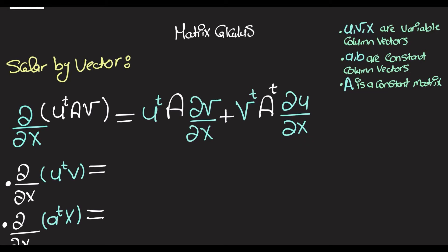For this video, I'll be exploring some more scalar-by-vector identities. I'm going to start by highlighting that u, v, and x here will be variable column vectors, a and b are going to be constant column vectors, and A is going to be a constant matrix.